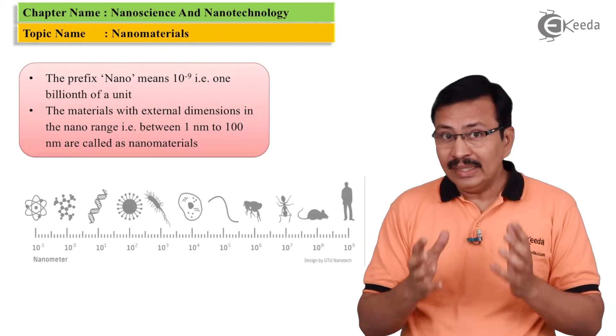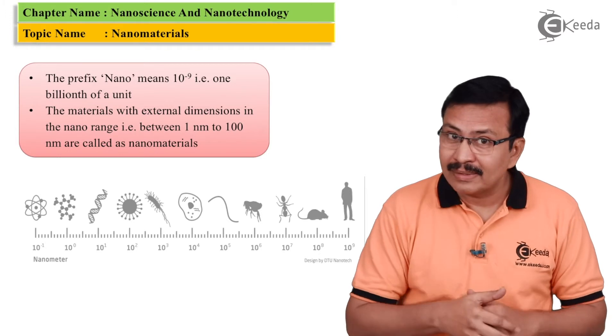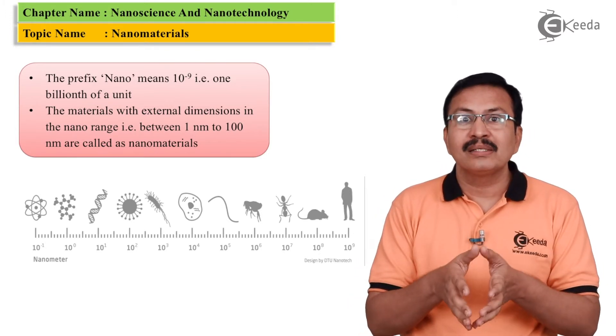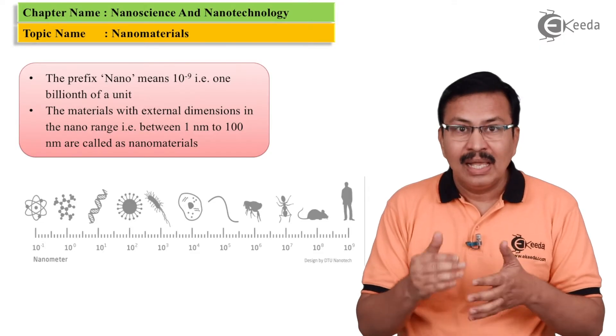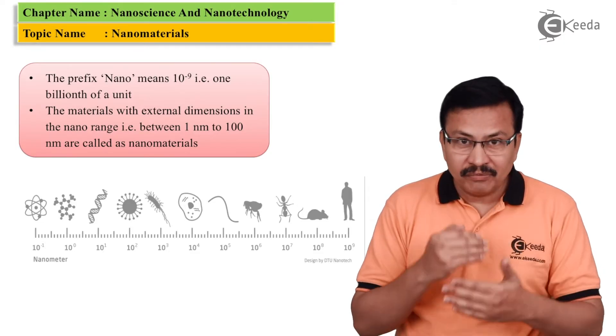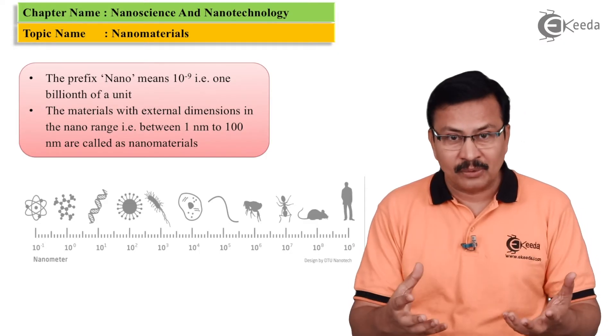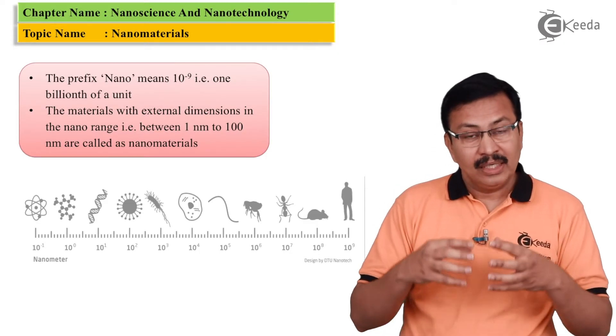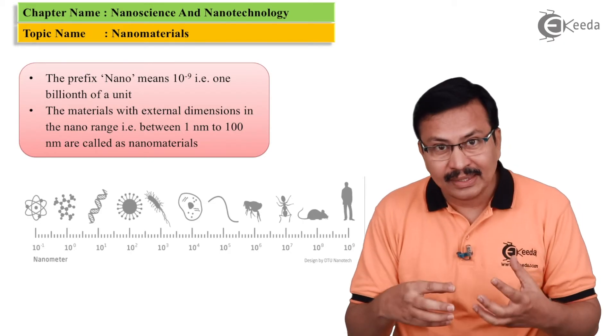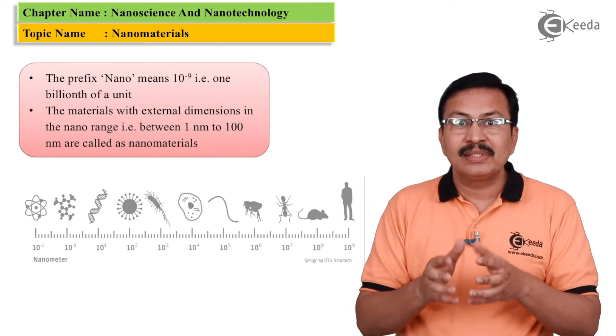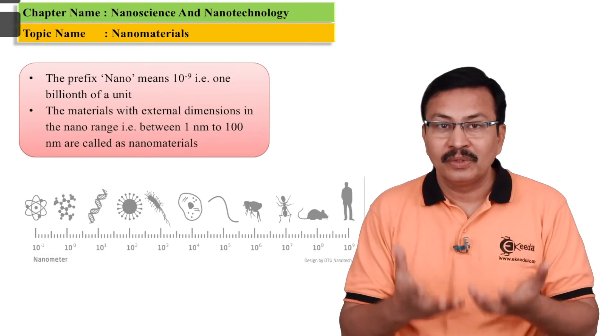So, any material which has particles in the nanometer scale is known as a nanomaterial. And a study of this, of their behavior is called as nanoscience. And if we want to fabricate something in this scale of particles then we say that it is called as nanotechnology.